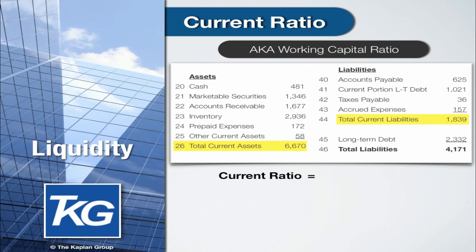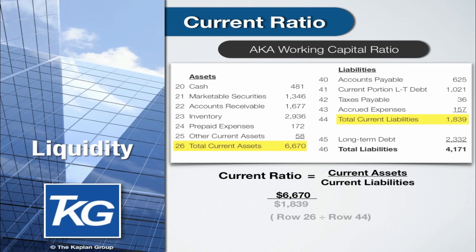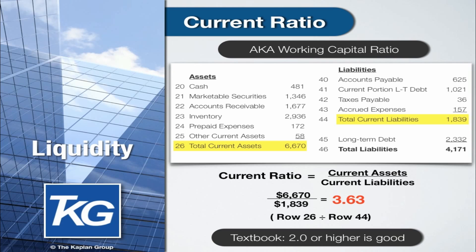It is simply current assets divided by current liabilities. In this example, that means $6,670,000 of current assets divided by $1,839,000 of current liabilities, and gives us a number of 3.63. The accounting textbooks will tell you that a current ratio of 2.0 or higher is an indicator of the company having sufficient liquidity. This is one of the key measures of liquidity.